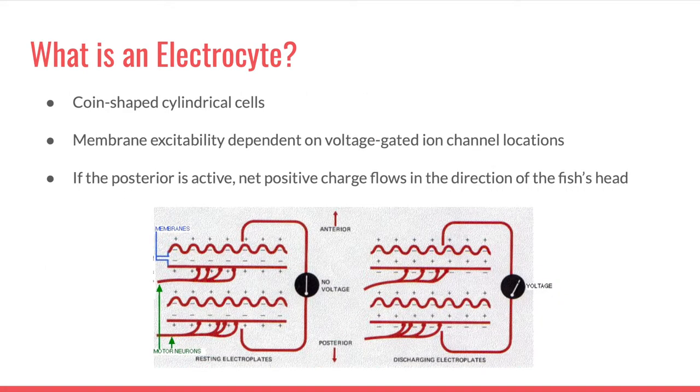What is an electrocyte? Electrocytes are the constituents of the electric organ and can be best described as pancake or coin-shaped cylindrical cells that are tightly packed together. The excitability of their membranes is dependent on voltage-gated ion channels, but specifically, the location of these channels on the membrane is of importance as it will dictate discharge direction. For the posterior active configuration pictured here, the net positive charge will flow in the direction of the fish's head since positive ions are flowing through the posterior membrane in the anterior direction. This is called a monophasic head-positive pulse.